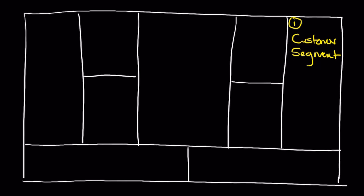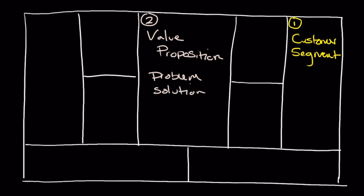Once we've identified the customer, we move to block number two: the value proposition. The value proposition simply describes what's different about you and why people should care — it typically addresses the problem and the solution. A simple template I encourage students to use is: 'We provide [blank — your offer] to [blank — your customer] so that they can [blank].' That last piece is the value proposition — what you're allowing your customer to do and why their life will be different with your product or service.